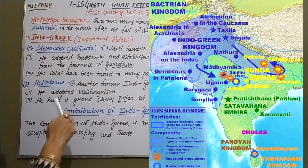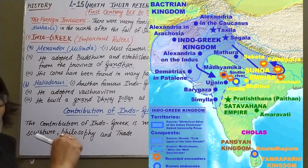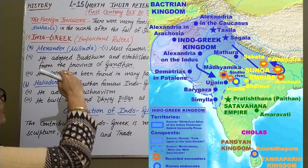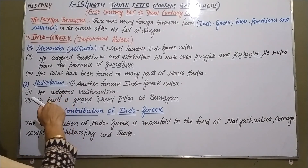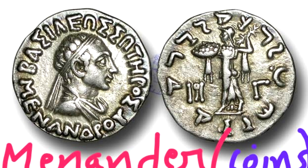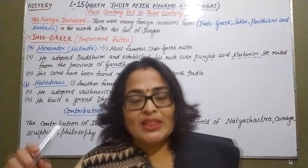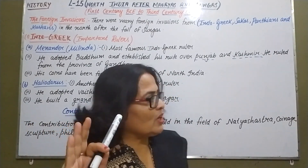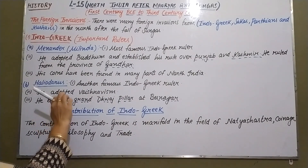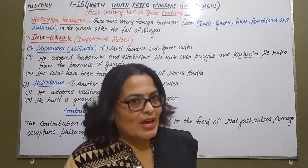The first famous Indo-Greek king was Menander, who ruled over the province of Gandhara — which is modern Afghanistan. His coins have been found in many parts of North India. The second famous Indo-Greek king was Heliodorus. Menander adopted Buddhism, and Heliodorus adopted Vaishnavism.